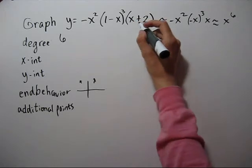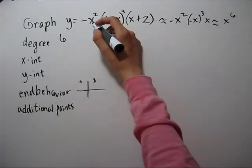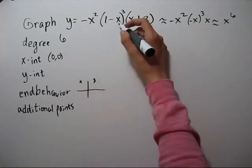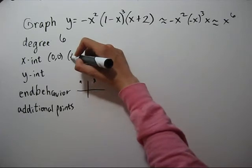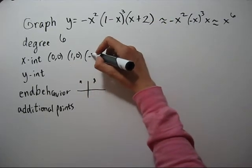X intercepts. This is already factored, so let's see what makes each factor zero. Now zero makes x squared zero, so we have zero, zero. One makes this factor zero. And negative two makes that factor zero.